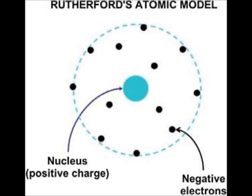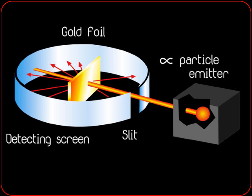He is widely credited with first splitting the atom in 1917 in a nuclear reaction between nitrogen and alpha particles, in which he also discovered and named the proton. This led to the first experiment to split the nucleus in a fully controlled manner. In 1919, he discovered that the nuclei of certain light elements, such as nitrogen, could be disintegrated by the impact of energetic alpha particles coming from some radioactive source, and that during this process, fast protons were emitted. It was later proved with the cloud chamber that nitrogen in this process was actually transformed into an oxygen isotope, so that Rutherford was the first to deliberately transmute one element into another.